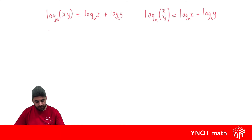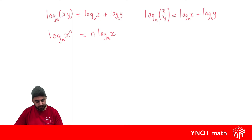If we have the log of a number to a power with some base, we can bring that power to the front. So we're just bringing the power down to the front, and it ends up multiplied by the rest of the term.